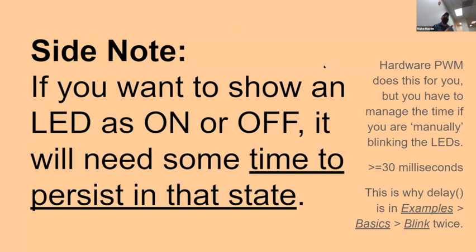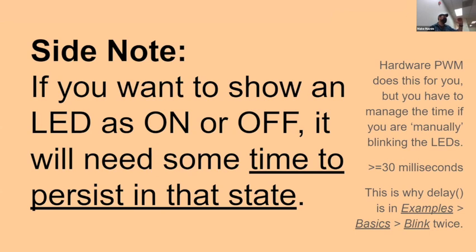If you want to show an LED as flatly on or off, you have to let it live in that state for a time. This gets a lot of people new to writing code for LEDs. Hardware pulse width modulation manages the on-and-off time for you. But if you want an LED to be on, I've seen people write code that turns on the LED and then the very next thing turns it off with no time in between. If you turn on an LED, it needs to sit there for at least about 20 milliseconds for you to even notice it was on.